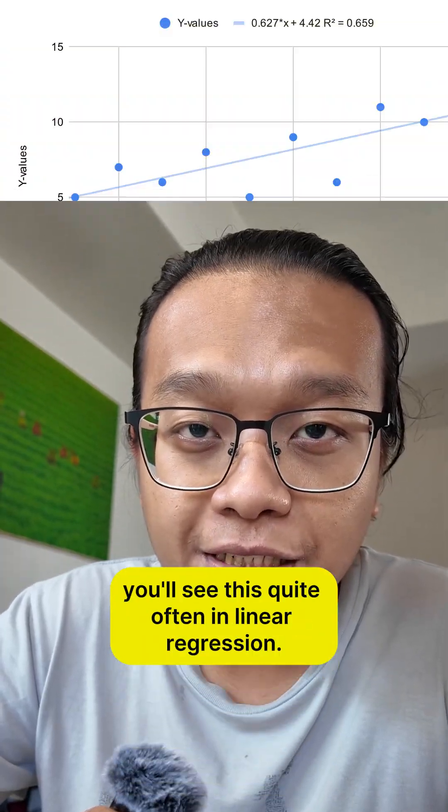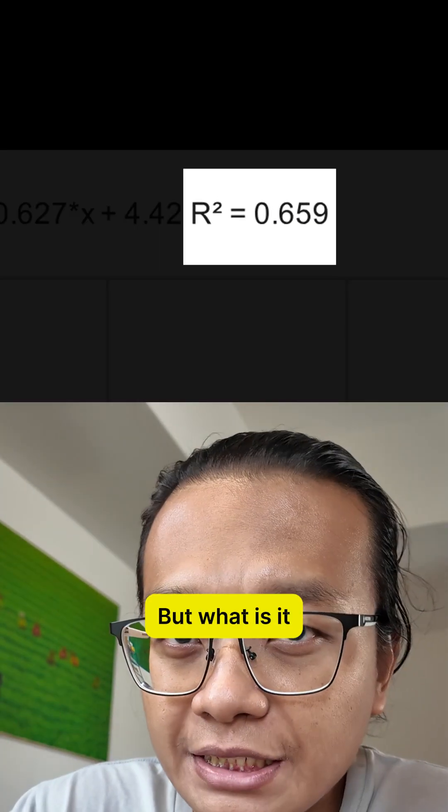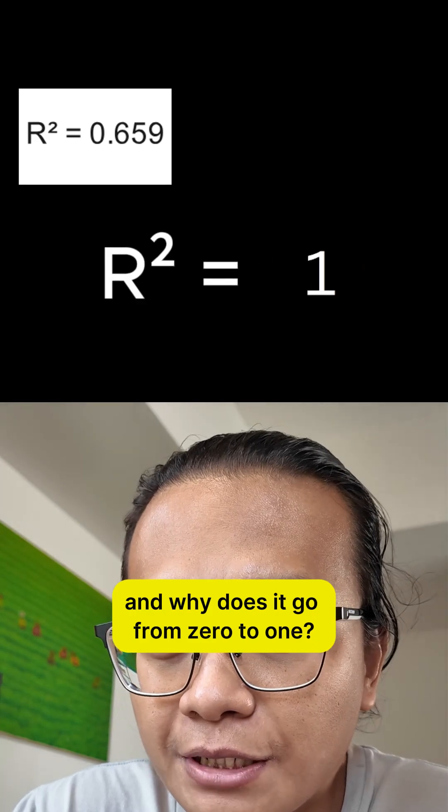As a data analyst, you'll see this quite often in linear regression. But what is it, and why does it go from 0 to 1?